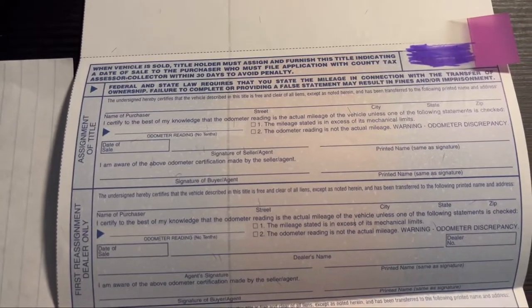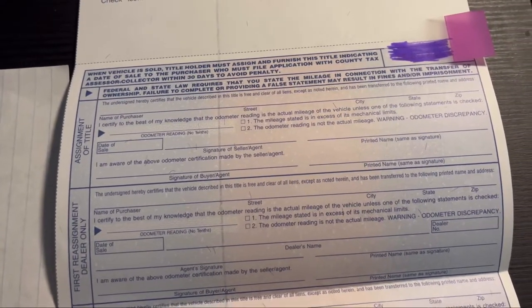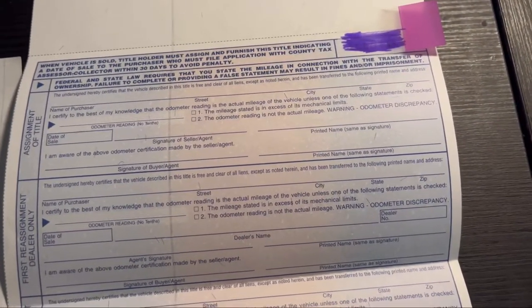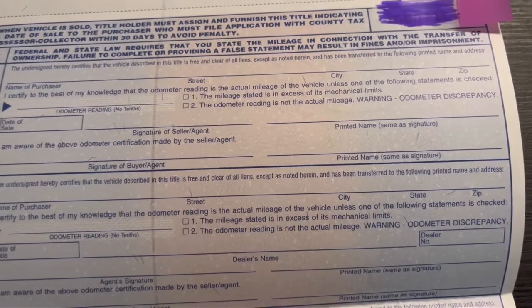So right here, name of purchaser. That's where, if I was buying a car from a private party, I would sign, put my address, all that information. We'd get the odometer, signature of seller. Obviously, that's the person who's selling the car.